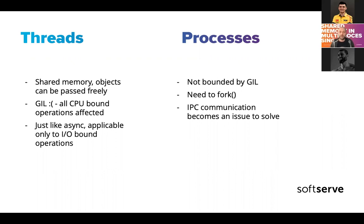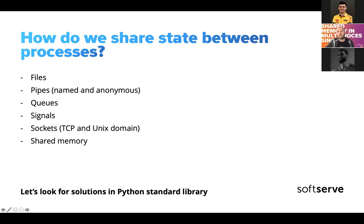There are a lot of IPC options provided by operating systems, by programming languages, and in Python by the standard library. Let's review what we have and how we can apply that. To share state between two independent programs that need to process and pass data between each other, we can use files. In the simplest example, one process reads from a file while another writes to it. This creates synchronization challenges, but we have locks and other mechanisms available.